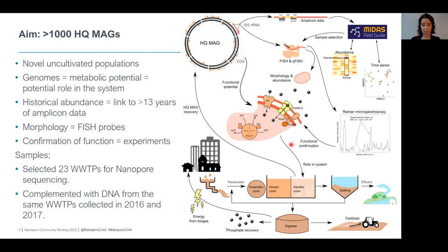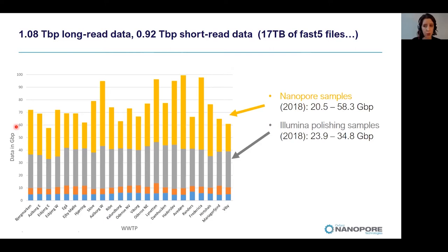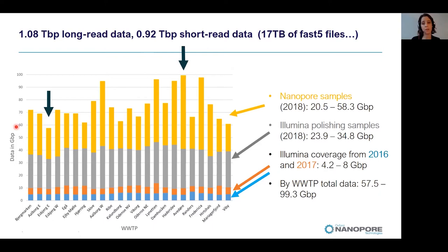In order to get these high-quality MAGs, we selected 23 wastewater treatment plants for nanopore sequencing, complemented with DNA from the same plants collected in 2016 and 2017. We ended up with over a terabyte of long-read data and 0.9 terabytes of short-read data. For the nanopore samples we had between 20 and 58 gigabase pairs, for the Illumina polishing samples between 23 and 34 gigabase pairs, and for the differential coverage binning samples between 4 and 8 gigabase pairs. Per plant, total data varied between 57 and 99 gigabase pairs.